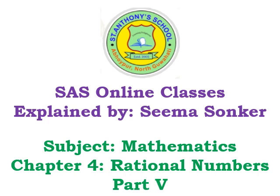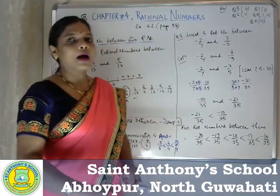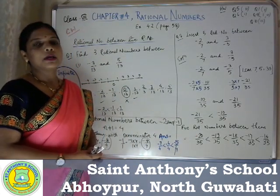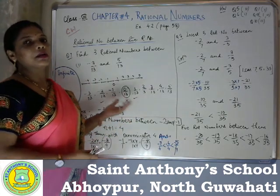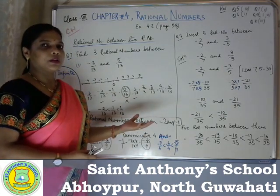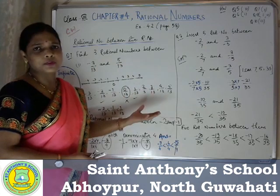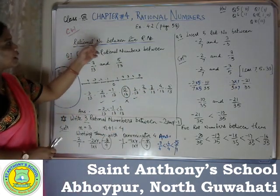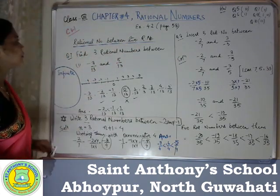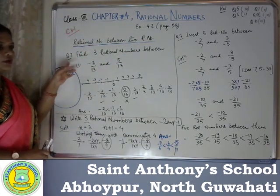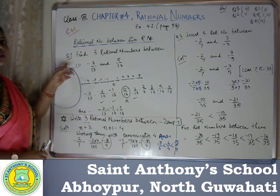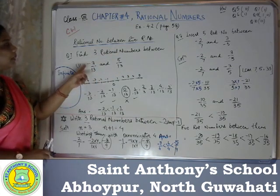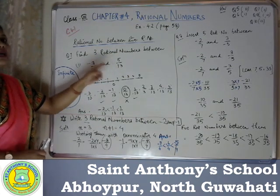Good morning, my dear students. Now we will see how to write rational numbers between two rational numbers. Suppose they have given two rational numbers and they are asking you to write two rational numbers between the given numbers, or three, or maybe five, maybe ten. Let us see how to write them. The heading is: rational numbers between two rational numbers. I am taking question number seven of your exercise: find three rational numbers between minus three by thirteen and five by thirteen.